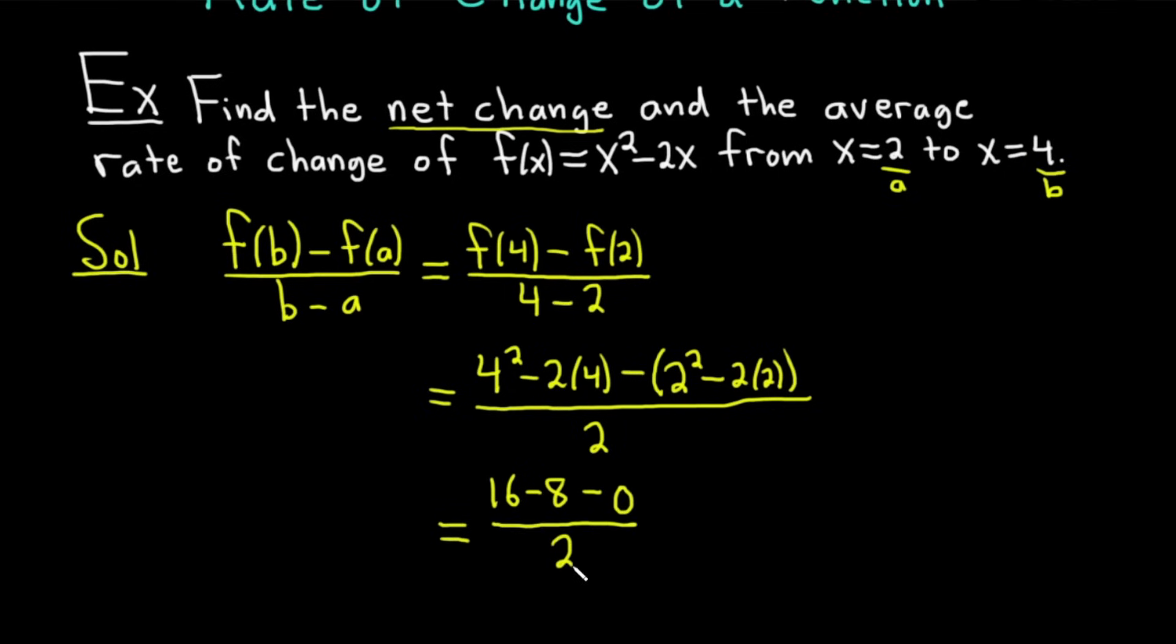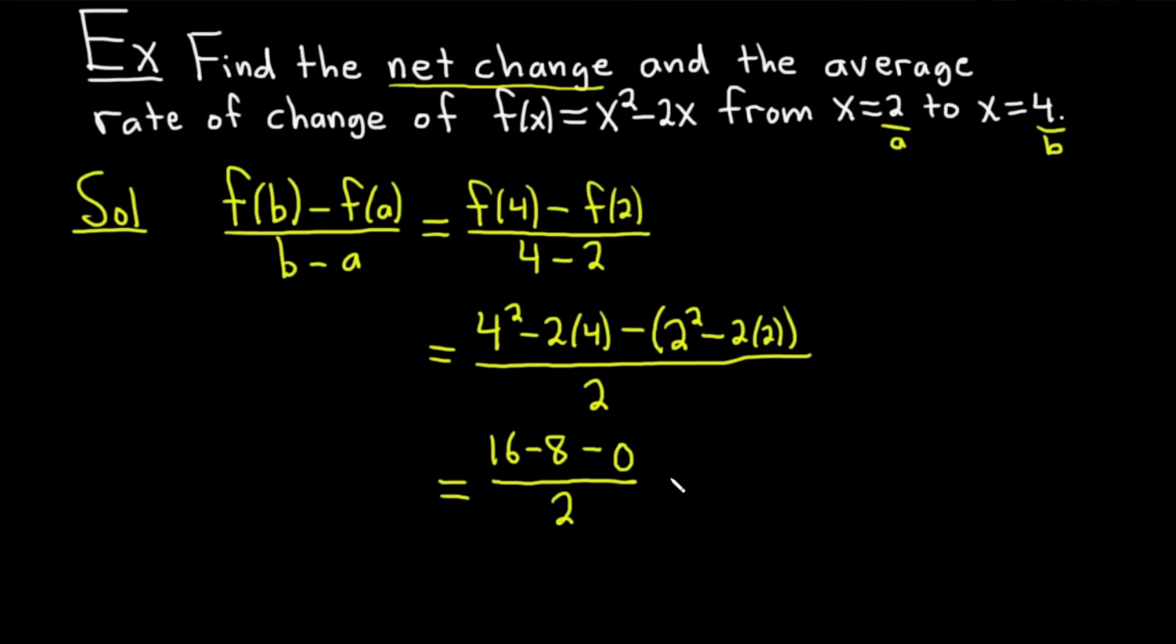And this is equal to, I'll go down a little bit more. Well I'll go this way. We got room. 16 - 8 is 8. So we have 8 over 2. And so we get 4 as the average rate of change. Kind of nice, right? That's our average rate of change. I'm going to write that down.